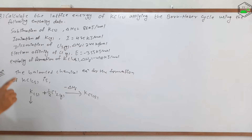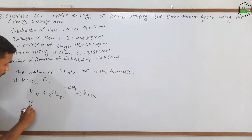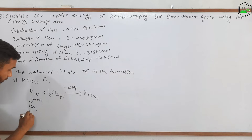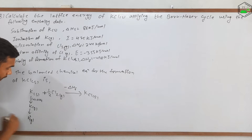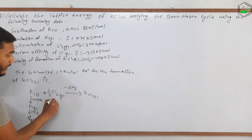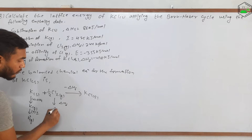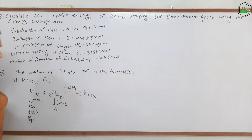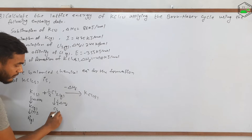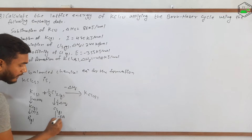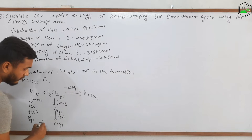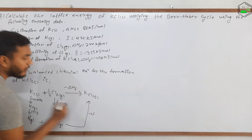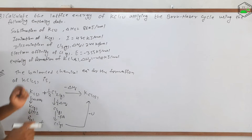In the Born-Haber cycle steps: first, potassium solid converts to potassium gas by gaining sublimation energy (ΔHs). Then potassium gas converts to K⁺ gaseous ion by gaining ionization energy (I). Chlorine in diatomic form gains dissociation energy (ΔHD) to convert to monoatomic form. The monoatomic chlorine then releases electron affinity energy (Ea) to form Cl⁻ in the gaseous state. Finally, K⁺ and Cl⁻ react, releasing lattice energy (−U), to form potassium chloride.